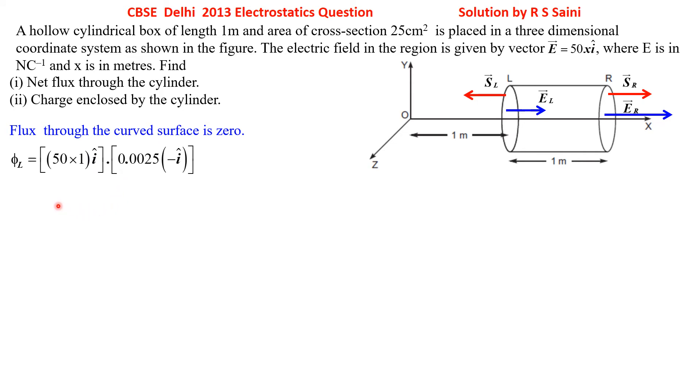Flux on left-hand side would be: electric field is pointing along positive x-axis, 50 into x-coordinate 1 into i-cap. It is to be dotted with area. Area in magnitude is 25 divided by 10,000, gives 0.0025. Direction is along negative x-axis as minus i-cap. i-cap dotted with i-cap is 1 and rest we are left with 50 into 0.025 into minus 1, that is equal to minus 0.125 volt meter.